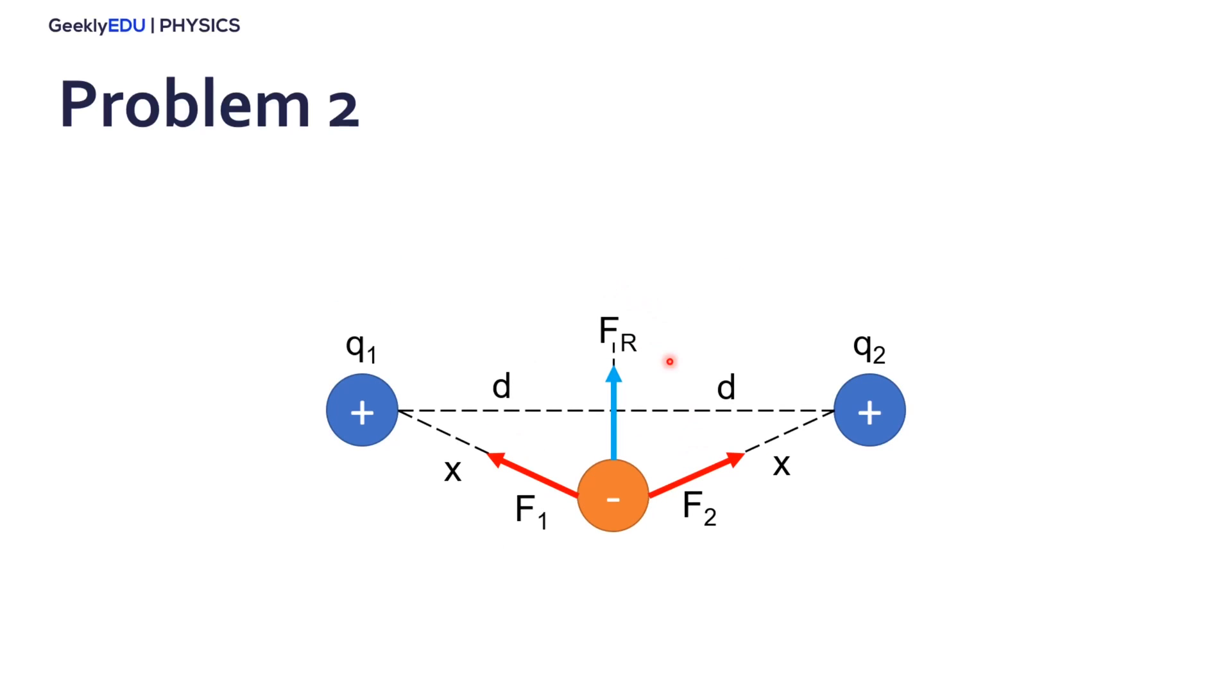Now, imagine we have this displacement here in the vertical direction. So what's happening here is that the forces are still the same, F1 equals F2, but now we have a component in the vertical direction. The x component, they cancel each other, but not the y component, the vertical component. So the resultant force is actually pointing up. And symmetrically, if we move this particle here up, we also have the same result, but the resultant force is pointing down now.